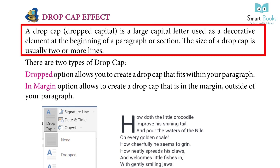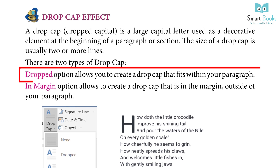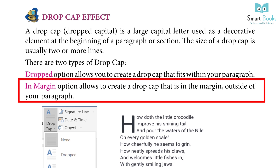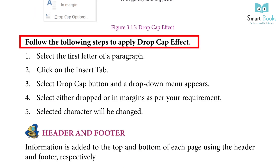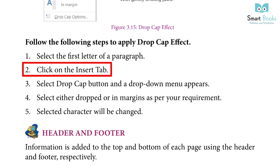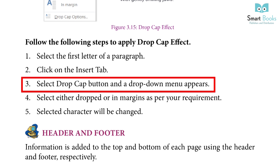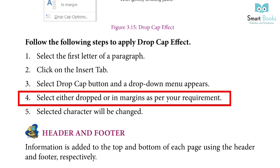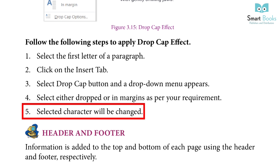Drop Cap Effect: A drop cap is a large capital letter used as a decorative element at the beginning of a paragraph or section. The size of a drop cap is usually two or more lines. There are two types: the Dropped option creates a drop cap that fits within your paragraph, and the In Margin option creates a drop cap that sits in the margin outside the paragraph. Steps: 1. Select the first letter of a paragraph. 2. Click the insert tab. 3. Select the drop cap button — a dropdown menu appears. 4. Select either dropped or in margins. 5. The selected character will be changed.